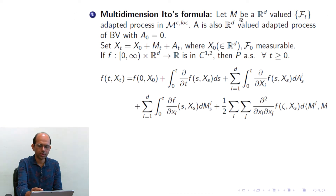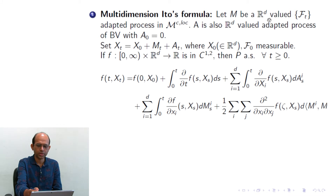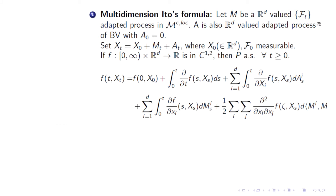Let M be an Rd-valued, Euclidean-space-valued, F_t-adapted process that is a continuous local martingale, and A is also an Rd-valued adapted process of bounded variation with A₀ = 0. If we add M_t, A_t, and some X₀ which is F₀-measurable, then what we get is a semimartingale.